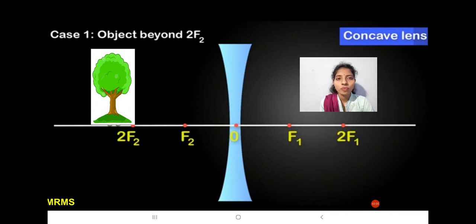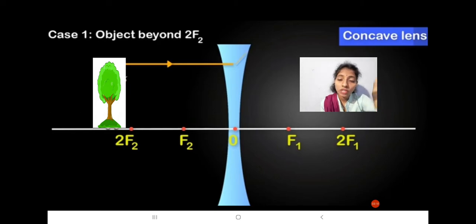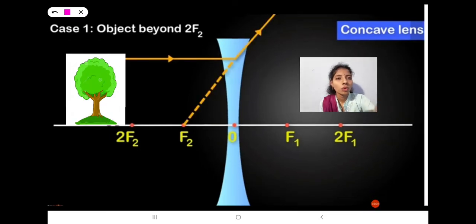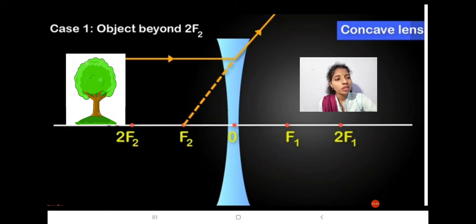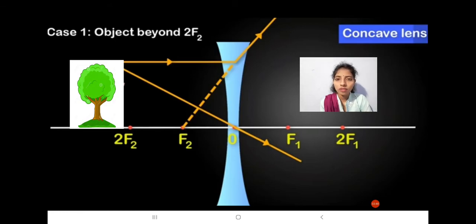First case: object beyond 2F2. We are taking Rule 1 — when the light ray is parallel to the principal axis, after refraction it appears to be coming from the focus. You can see here, after refraction it appears to be coming from the focus. Now drawing the second ray — when the ray is passing through the optical center, it moves in a straight path without deviation.